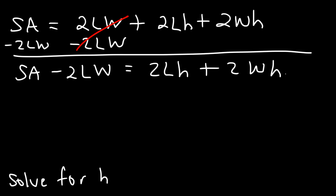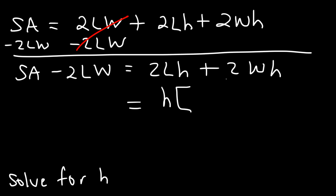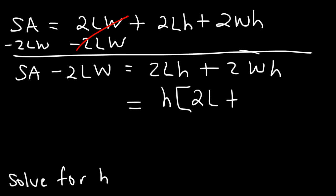Now, how can I get H by itself? Notice that H is found in both terms. When you see that, what you need to do is factor — factor out the greatest common factor. All I need to take out is H because I want to get that by itself. If I take H out of 2LH I'm left with 2L, and if I take H out of 2WH I'm left with 2W.